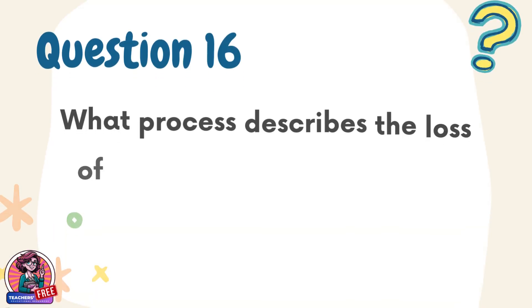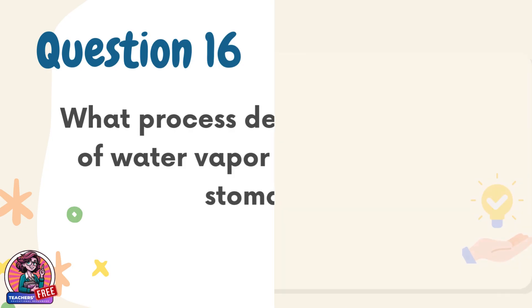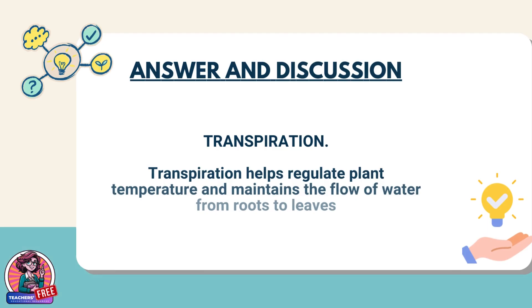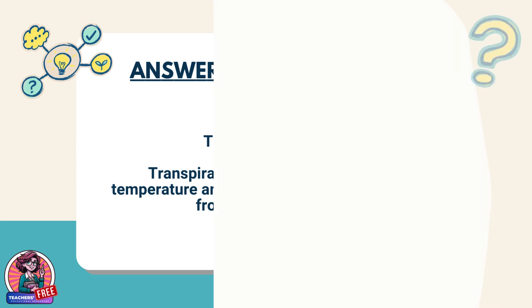Question 16. What process describes the loss of water vapor through plant stomata? Answer: Transpiration. Transpiration helps regulate plant temperature and maintains the flow of water from roots to leaves.